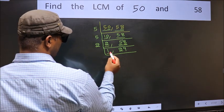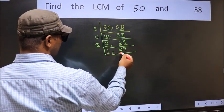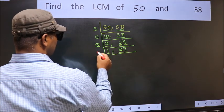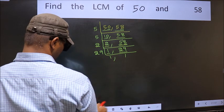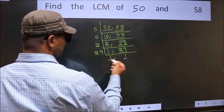Now we got 1 here. So focus on the other number 29. 29 is a prime number so 29 times 29. So we got 1 in both the places.